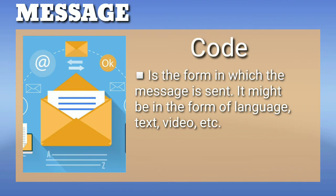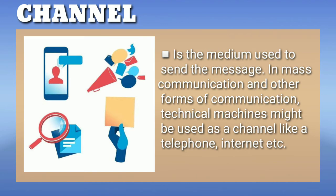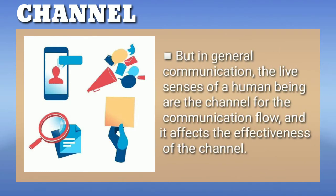If you enter a wrong password, you will not be able to open your email account. In the same way, the code has to be correct in communication — your body movements, language, expressions, and gestures are the codes of the message and have to be accurate; otherwise, the message gets distorted and the recipient will never decode the correct information. Those are the factors affecting the message. The third element is channel — the medium used to send the message. In mass communication, technical machines might be used as channel, like a telephone or internet, but in general communication, the five senses of human beings are the channel.